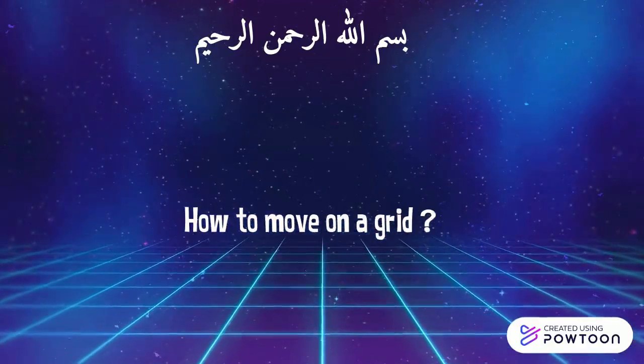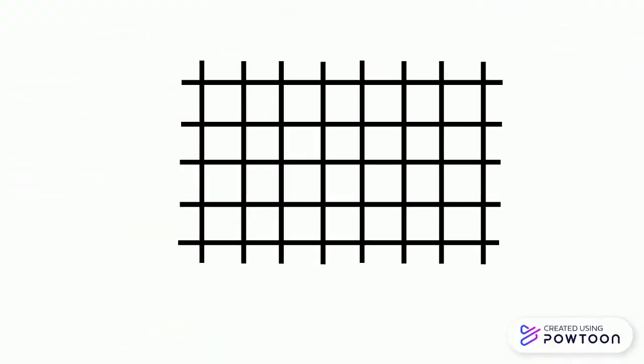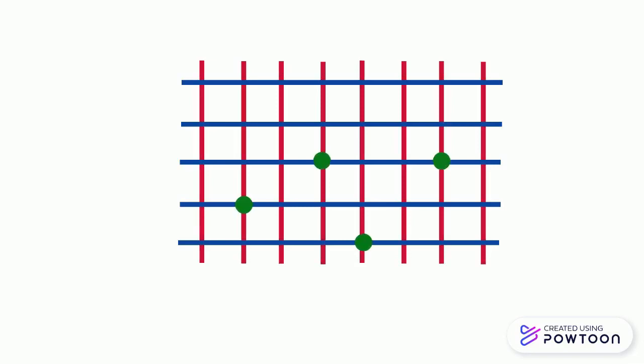How to move on a grid? This is a grid. It is formed of rows and columns. They form a node where they intersect each other.